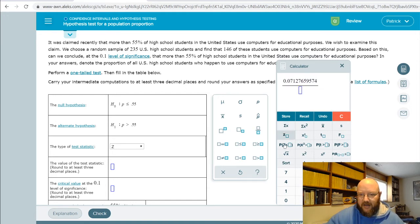So that gives you the difference between the two. Take that, divide it by square root, and we'll go through this slowly, of pi, which is 0.55, times 1 minus pi, which is 0.55, all over your sample size, which is 235. So that's how you want to punch that in the calculator there. Hit enter, and we get a test statistic.